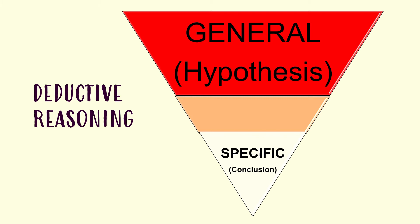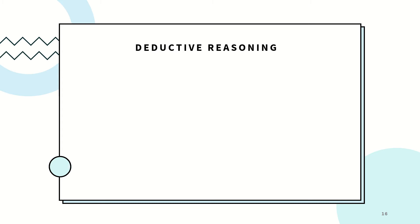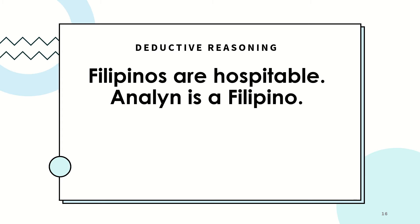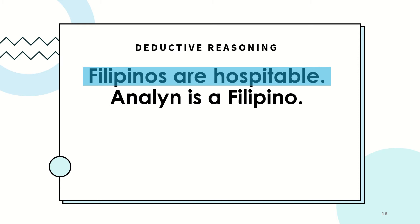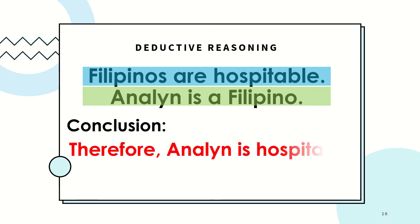Deductive reasoning starts with a generalization in hypothesis form and ends with a specific statement as its conclusion. For example, from the given statement, it generalizes that the whole Filipino community are hospitable, and it is considered the hypothesis of the whole argument. The general statement or hypothesis is: Filipinos are hospitable. Moreover, the statement 'Annaline is a Filipino' is a specific example. So from general to specific, we may conclude that Annaline is hospitable.